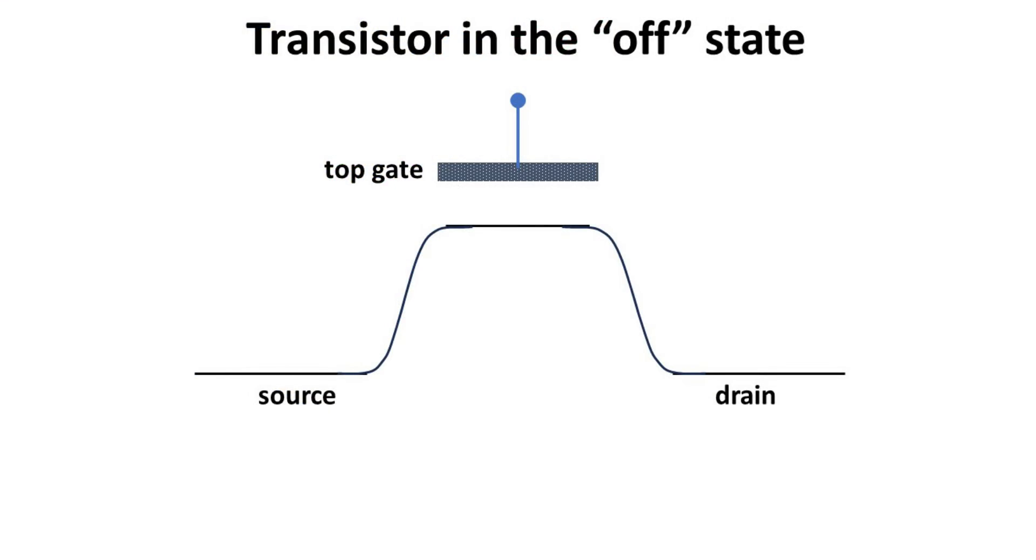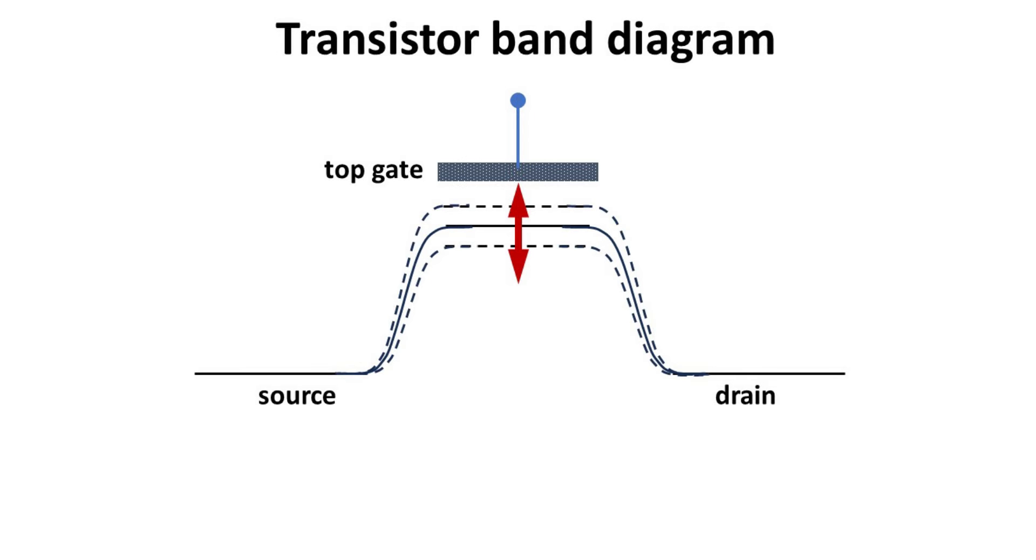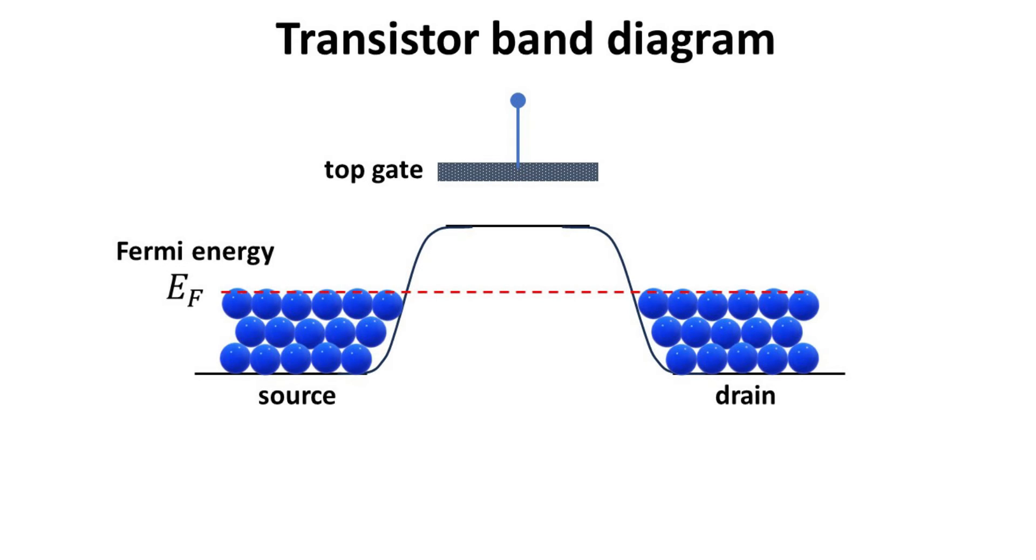Let's begin with the energy band diagram along the channel direction from the source to drain. It depicts the spatial profile of the conduction band edge. The top gate electrostatically modulates the channel profile. At thermal equilibrium, the Fermi levels in the different regions must align, and the electrons are filled up to the Fermi energy.